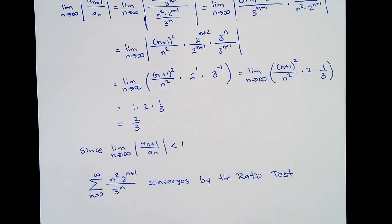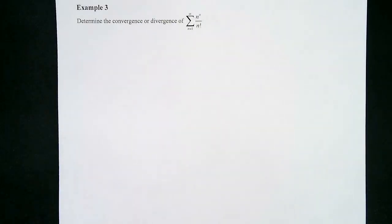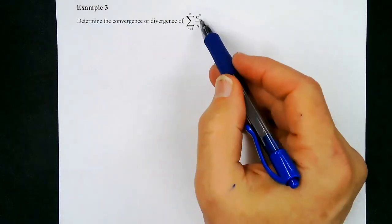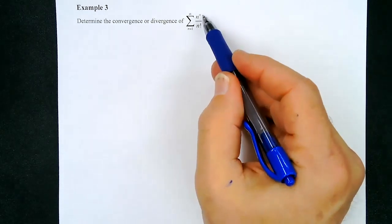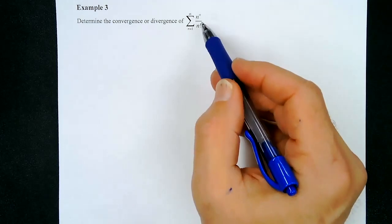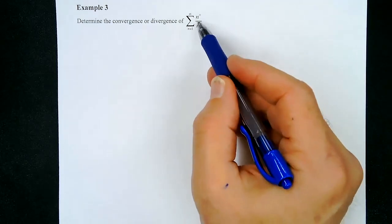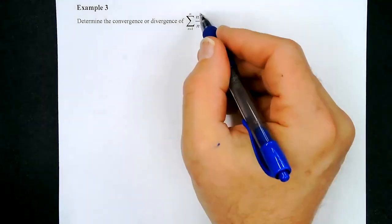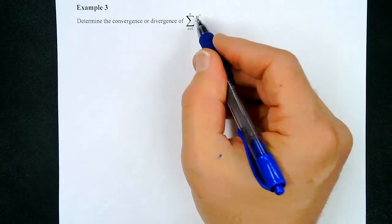Let's go to example number three. We want to determine the convergence or divergence of this series, which has n to the n power. That's not exactly an exponential, but we have a variable in the exponent, and we also have a factorial. So we should try the ratio test. This is kind of like an exponential, but not really, since the base would have to be a constant number for it to be a true exponential.